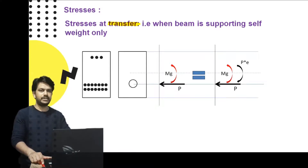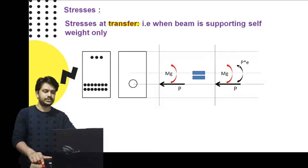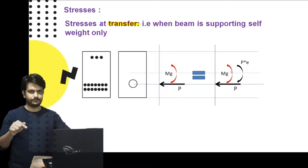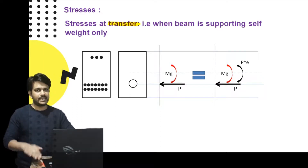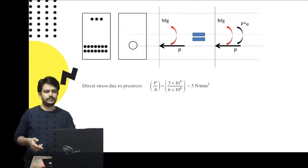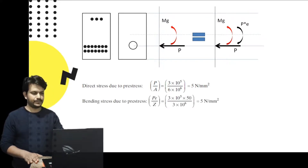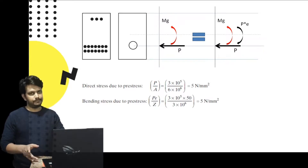The eccentric pre-stressing force creates a moment P×e in addition to the direct stress P/A. The dead load moment Mg is also present. So the cross-section is subjected to: direct stress P/A = 5 MPa, bending stress due to pre-stress P×e/Z = 5 MPa (which is hogging, so negative at top), and bending stress due to self-weight Mg/Z = 2.16 MPa (sagging, positive at top).